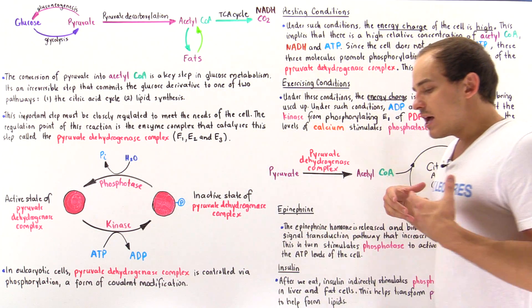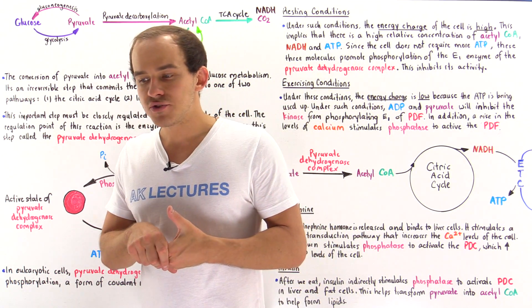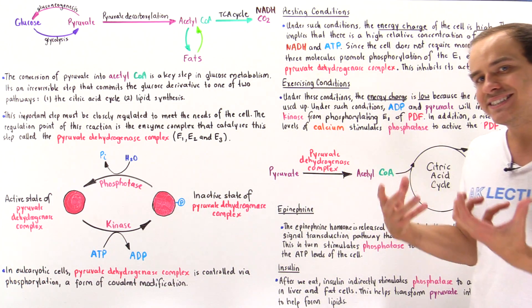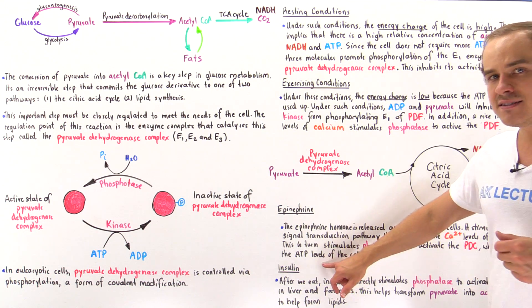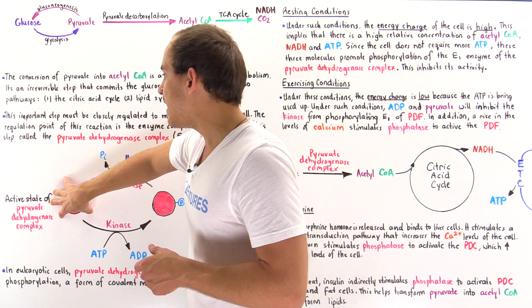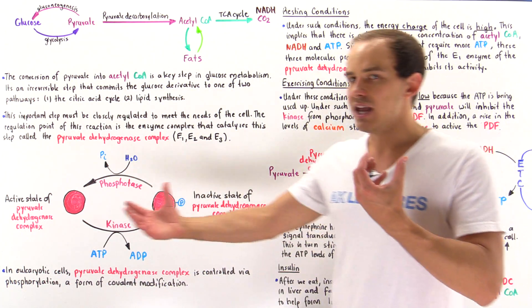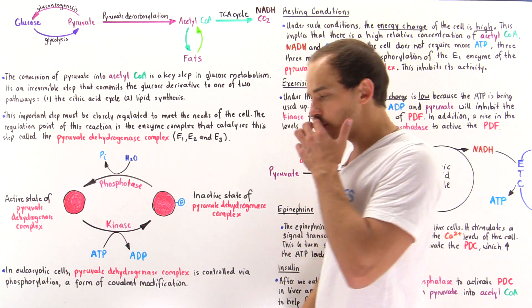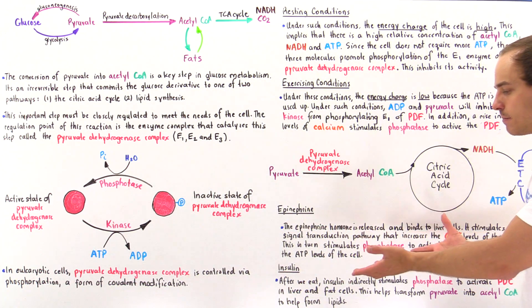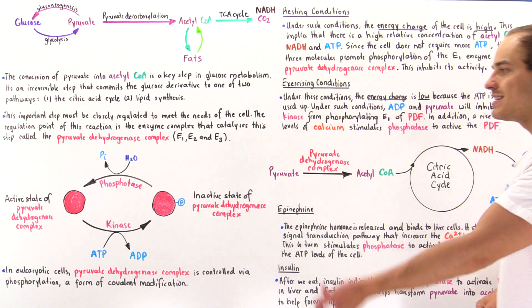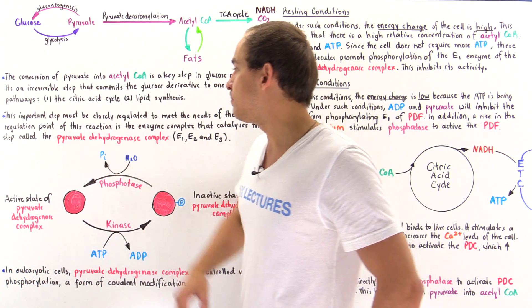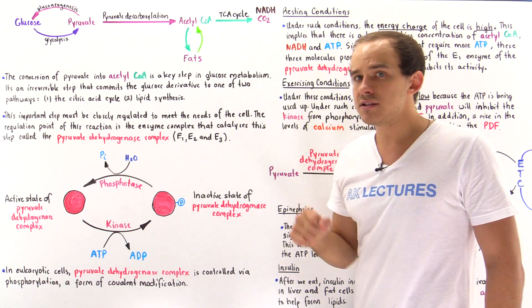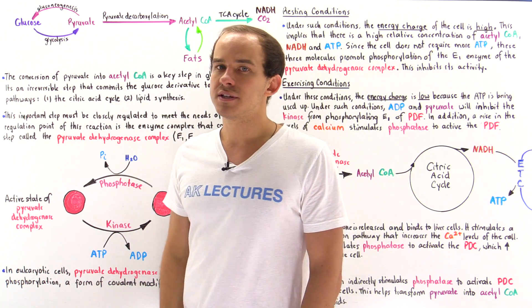Now, insulin. Following a meal that's rich in carbohydrates, our blood glucose level will rise, and liver cells and other cells of the body will try to maintain that glucose level. Liver cells will respond to insulin by activating the phosphatase and activating pyruvate dehydrogenase complex, so that all those glucose molecules absorbed by the liver cells can be transformed into acetyl-coenzyme A and produce ATP molecules. In other cells of the body — for instance, adipose cells (fat cells) — insulin can also indirectly stimulate the phosphatase to activate pyruvate dehydrogenase complex to produce many more acetyl-coenzyme A molecules, because in these fat cells, acetyl-coenzyme A are precursor molecules used to synthesize lipid molecules.